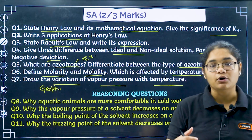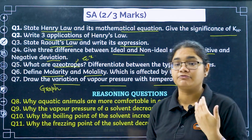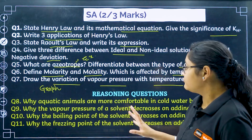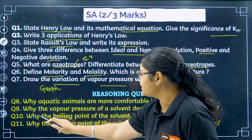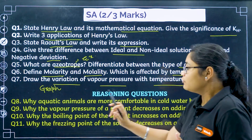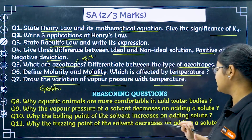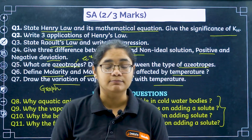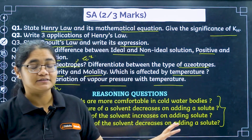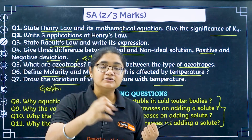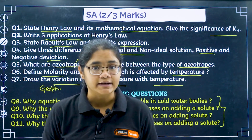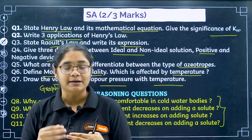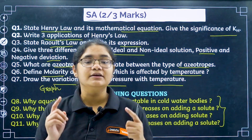Some reasoning questions are important. In the 2025 paper, the Solutions three-marker questions were slightly tricky. Key reasoning questions to focus on: Why are aquatic animals more comfortable in cold water? Why does vapor pressure of a solvent decrease on adding a solute? Why does the boiling point increase? Why does the freezing point of a solvent decrease on adding a solute? All four colligative properties — relative lowering of vapor pressure, elevation in boiling point, and depression in freezing point — their reasons should be clear. Application-based questions like why we add salt to snowy roads, or why water boils above 100°C at higher altitude, can also be asked as three-marker questions with one-line answers.